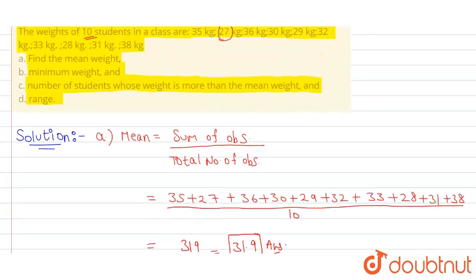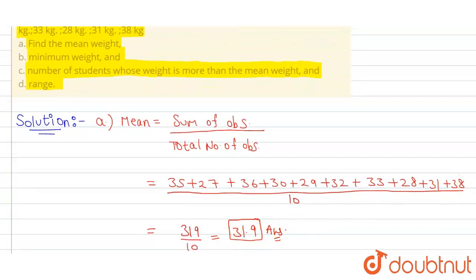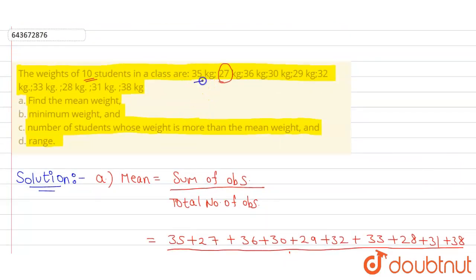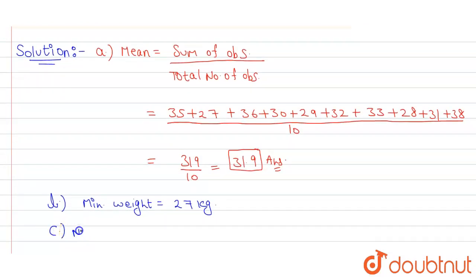Now third part is number of students whose weight is more than the mean weight, that means more than 31.9. So here more than 31.9 are 1, 2, 3, 4 and 5. There are total 5 students whose weight is more than the mean weight. So our part C answer is 5.